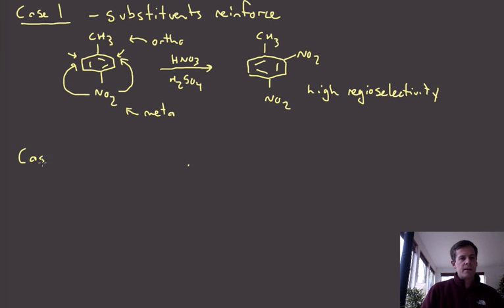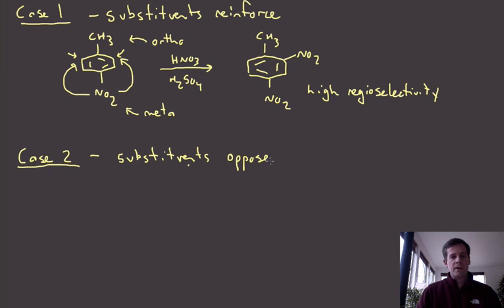Okay, and then in case two, case two tends to also be straightforward. So this is going to be where the substituents basically oppose one another, right? So they're pushing into different positions, oppose one another. So what would happen in this case? Two substituents are fighting for different positions, and we could look at an example here.